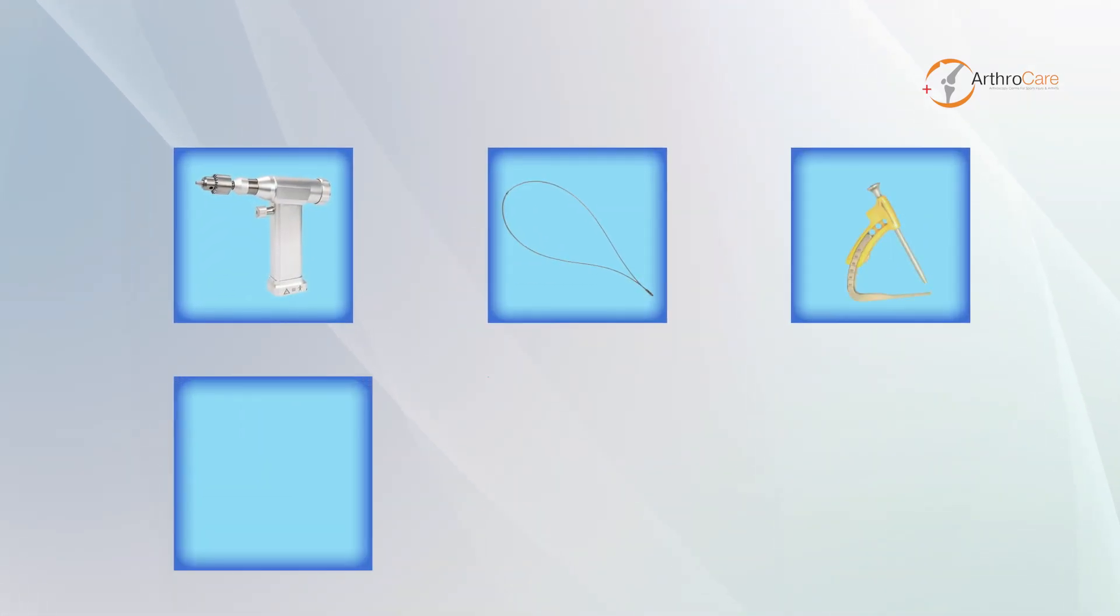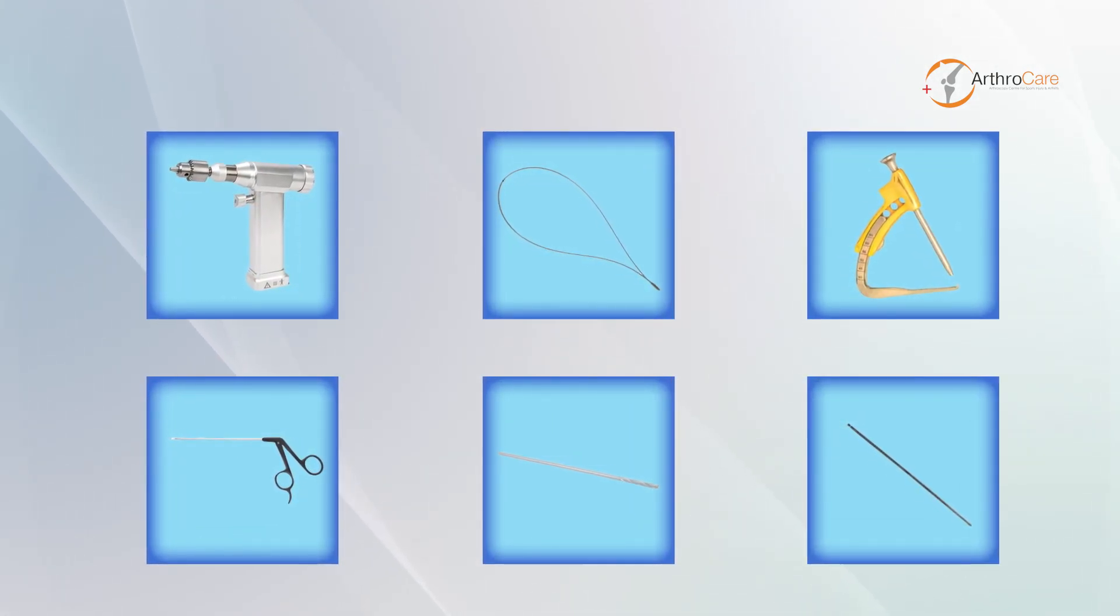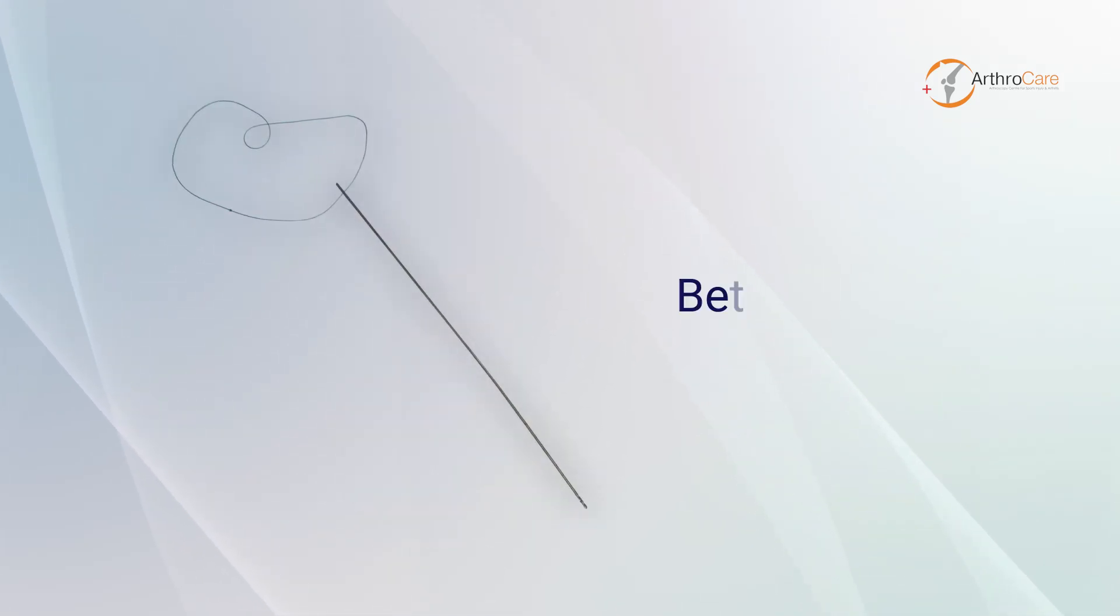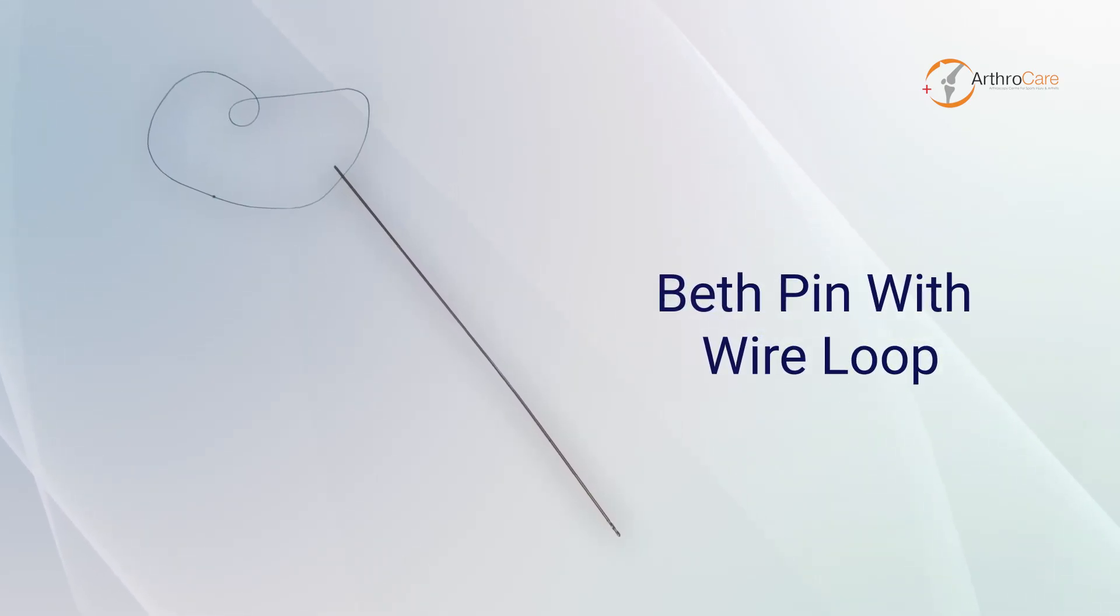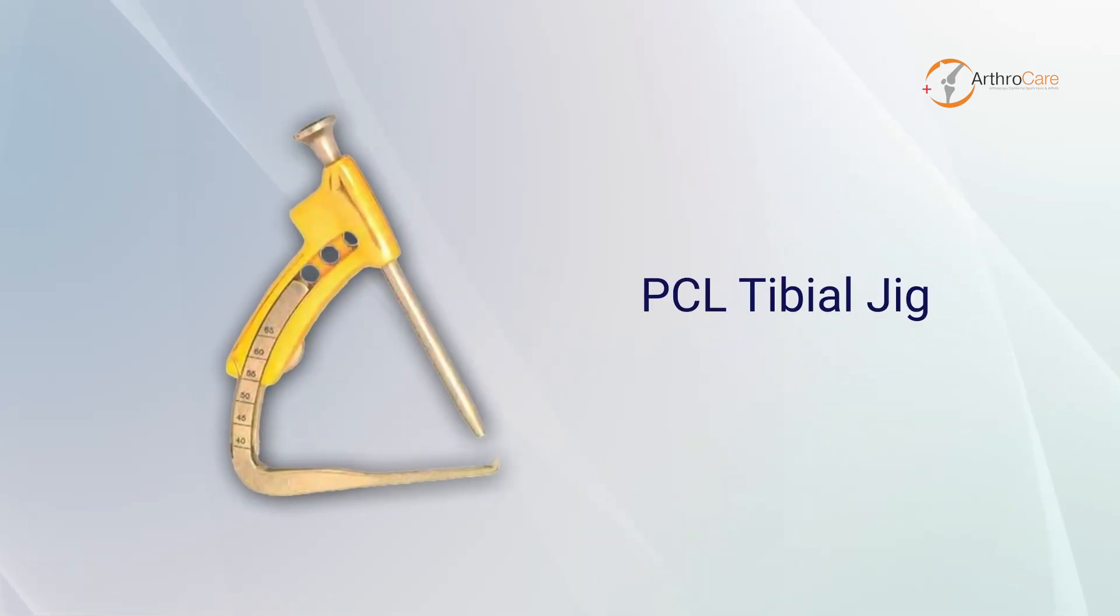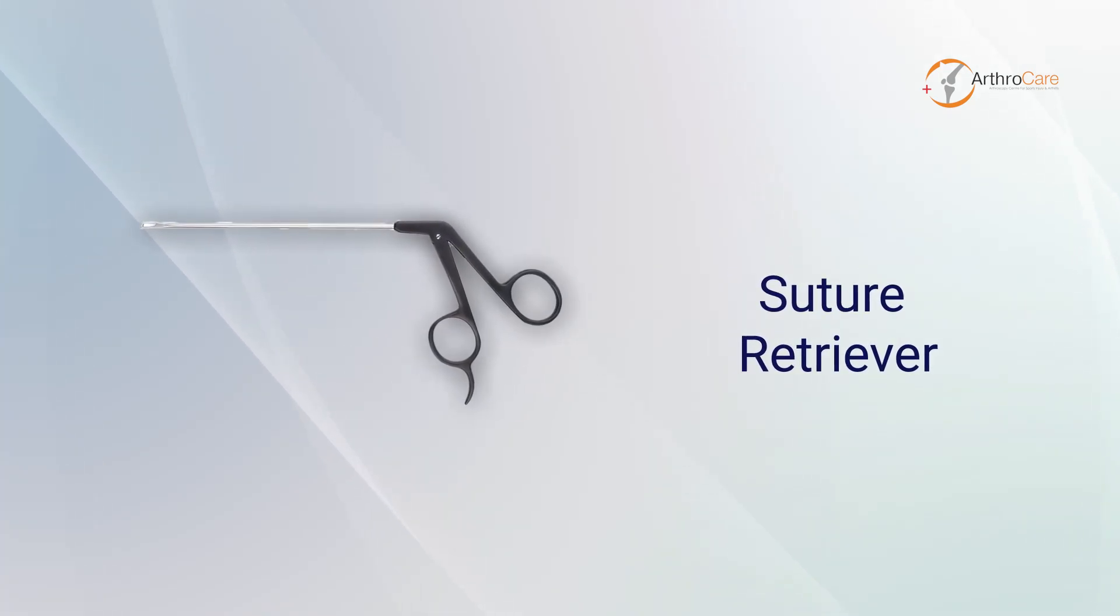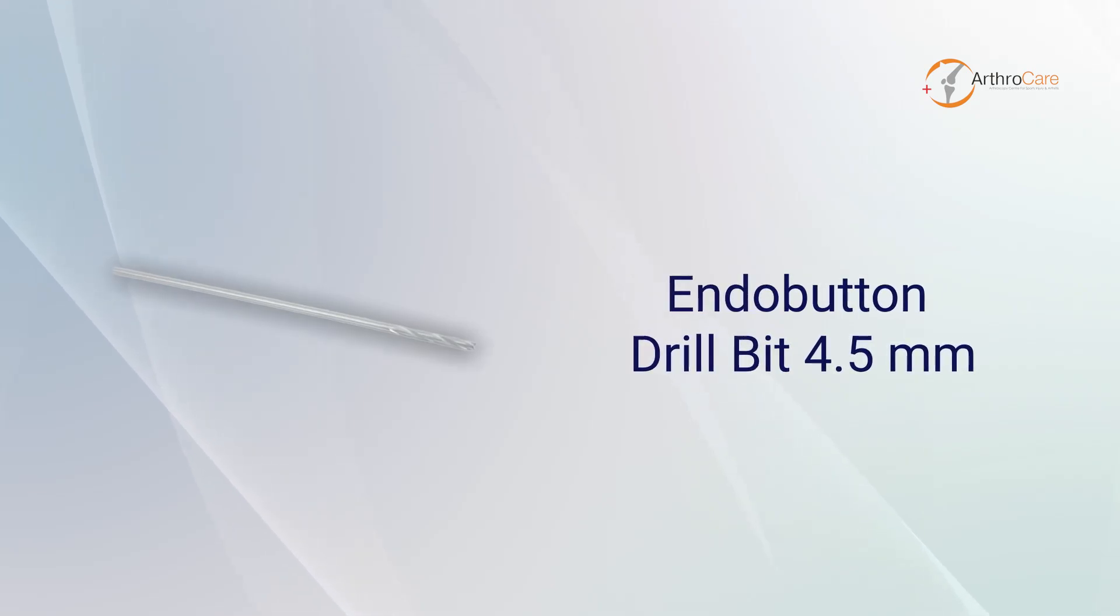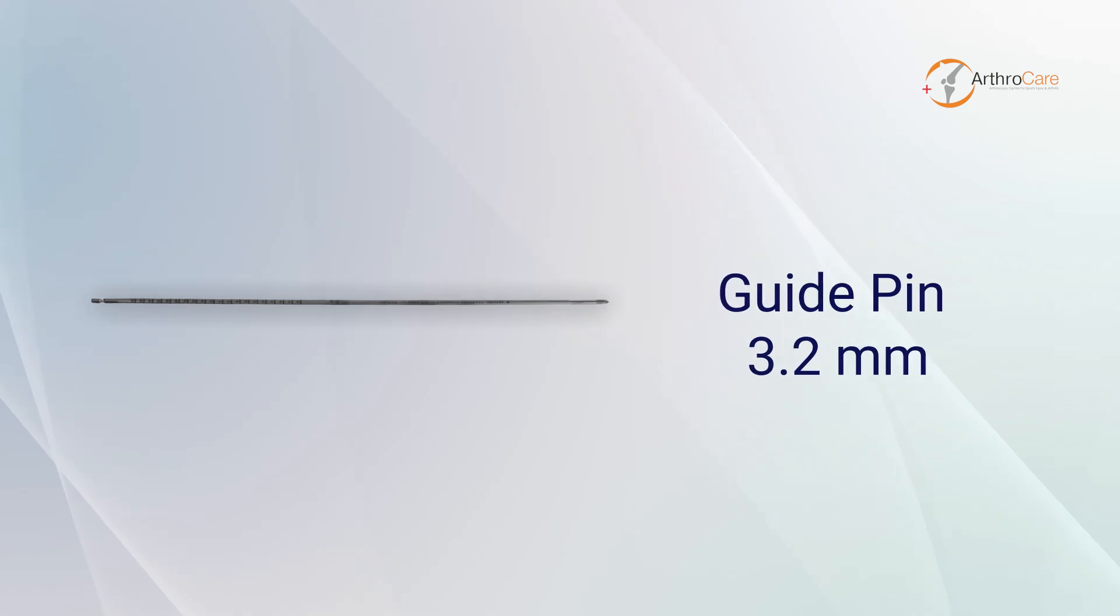I have used the following instruments to fix the PCL avulsion fragment: drill with jack-up chuck, K-wire with long wire loop made from fiber wire or Ethibond number 2, PCL jig, suture retriever, EndoButton drill bit 4.5mm, and 3.2mm guide pin.